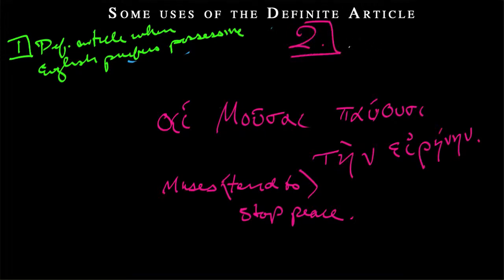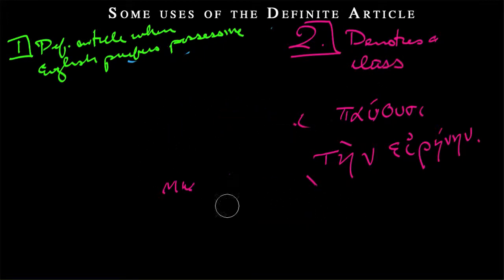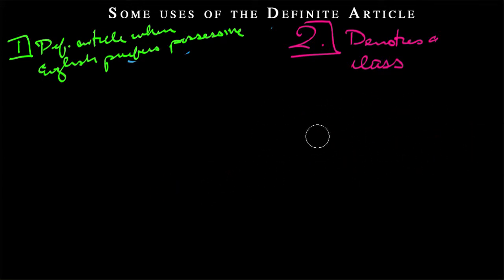So we're talking about muses as a class of agents. So that's our number two. Kind of bad example, but hopefully you got it. And this is the definite article denotes a class. Not just a specific group of muses, but muses writ large, all sorts of muses. In English we would just drop the definite article.